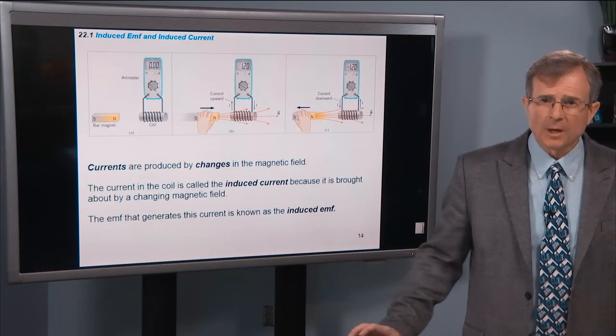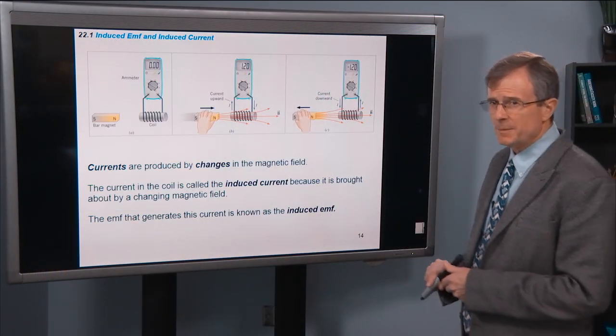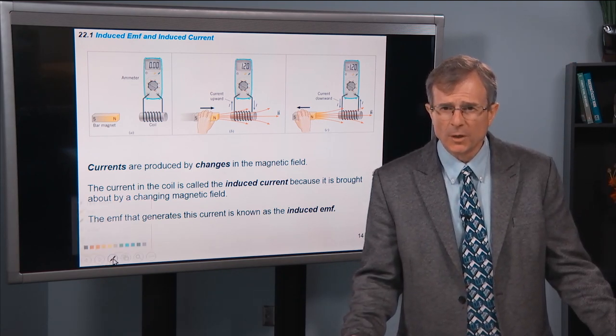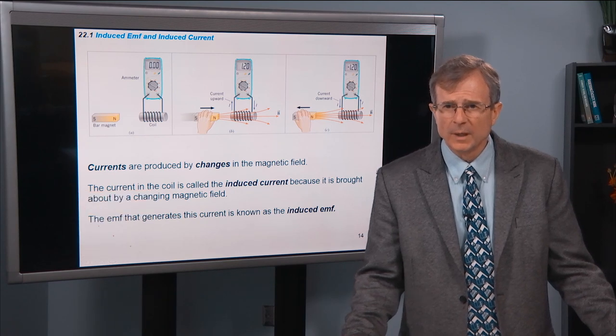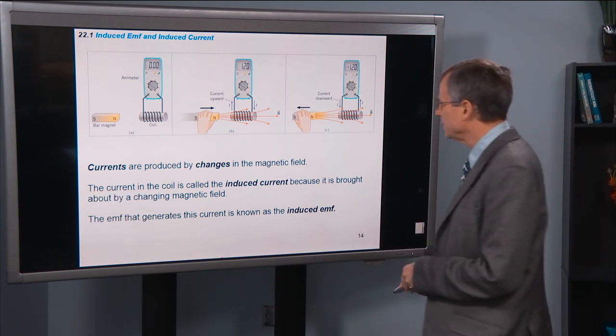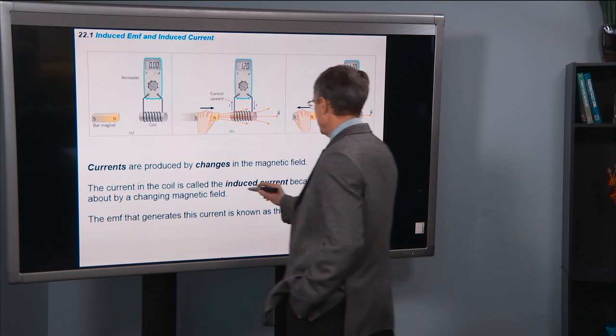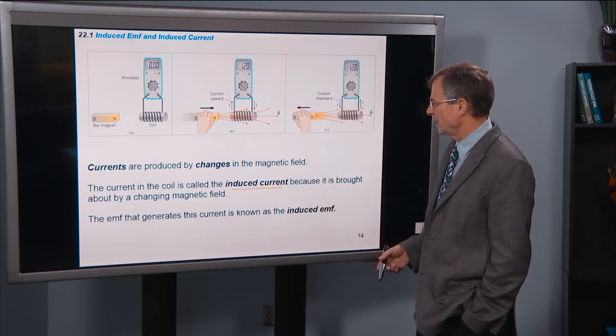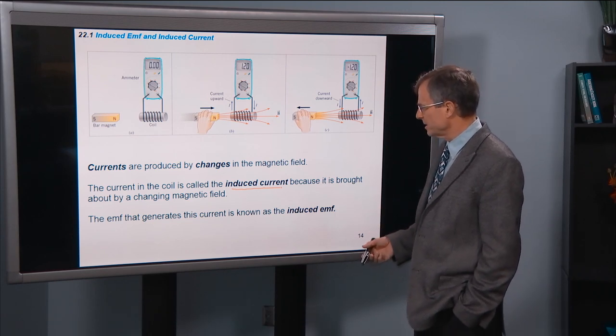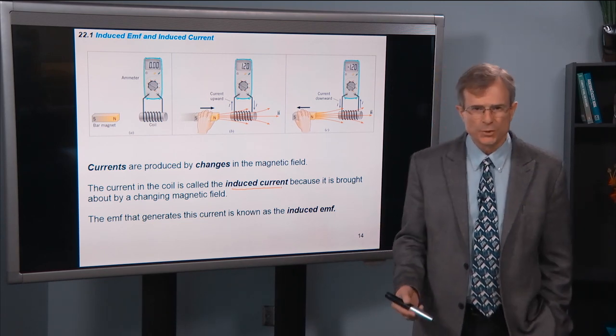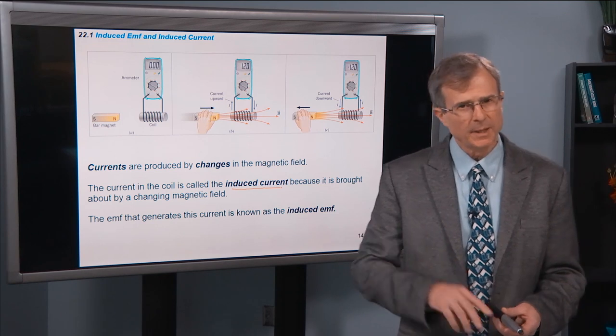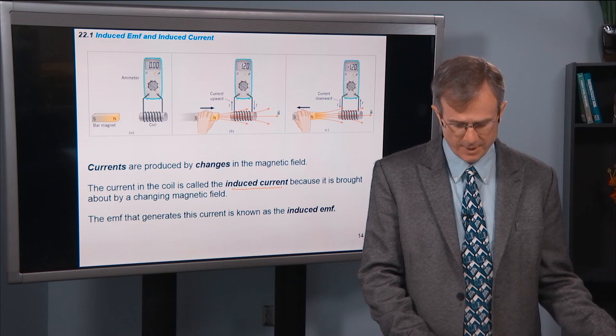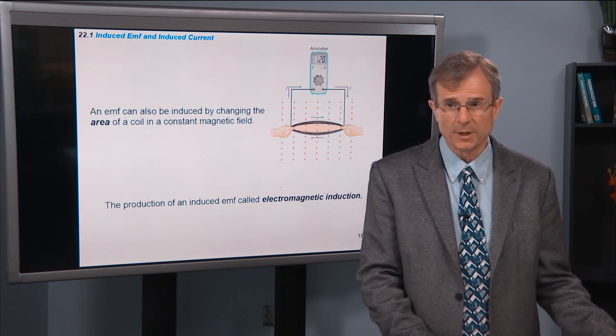Currents are produced by changes in the magnetic field. The current in the coil is called the induced current because it is brought about by a changing magnetic field. And the EMF that generates this current is known as the induced EMF. It's very similar to the induced EMF for the motional EMF that we talked about.